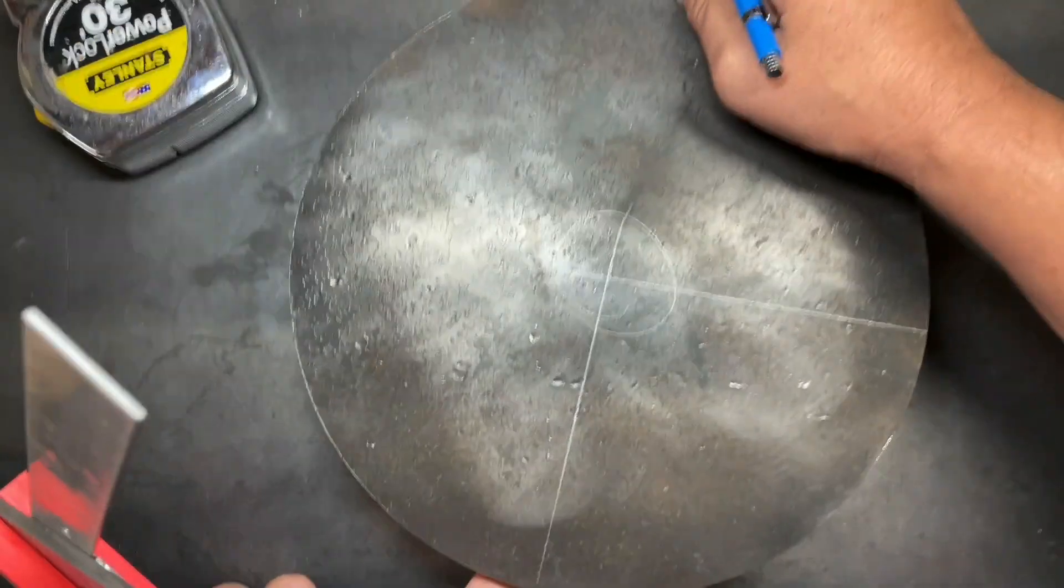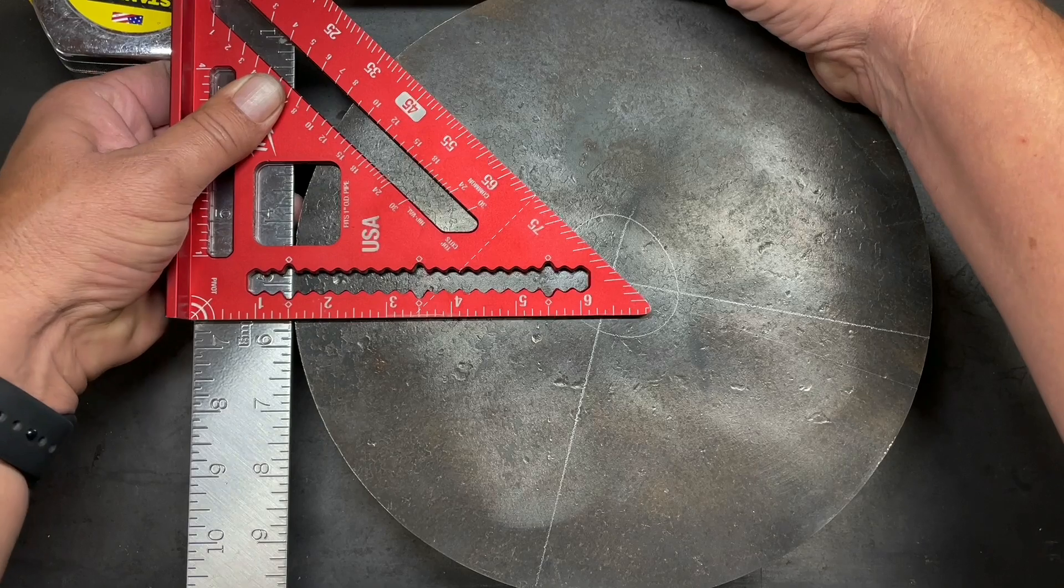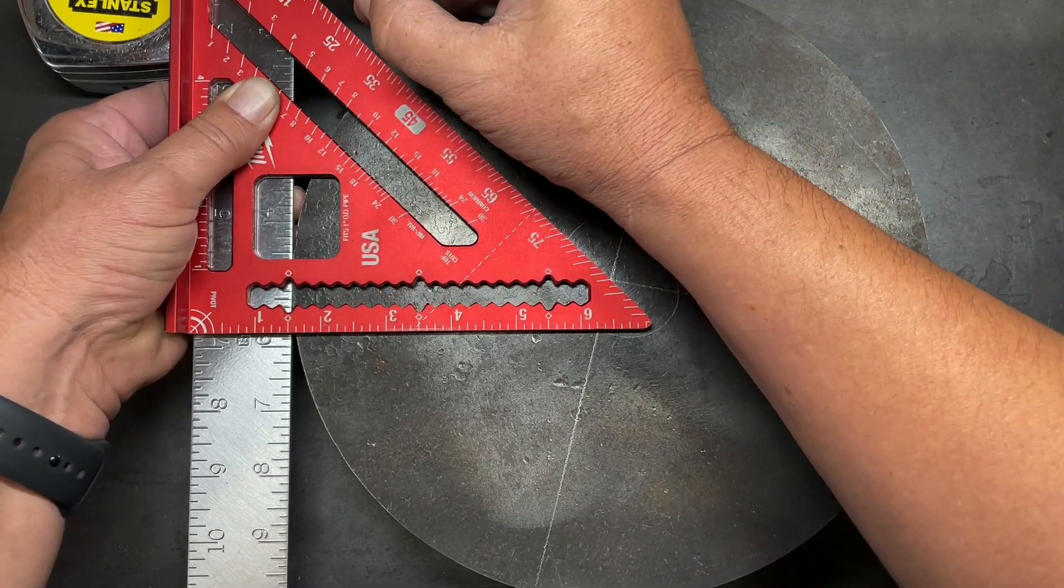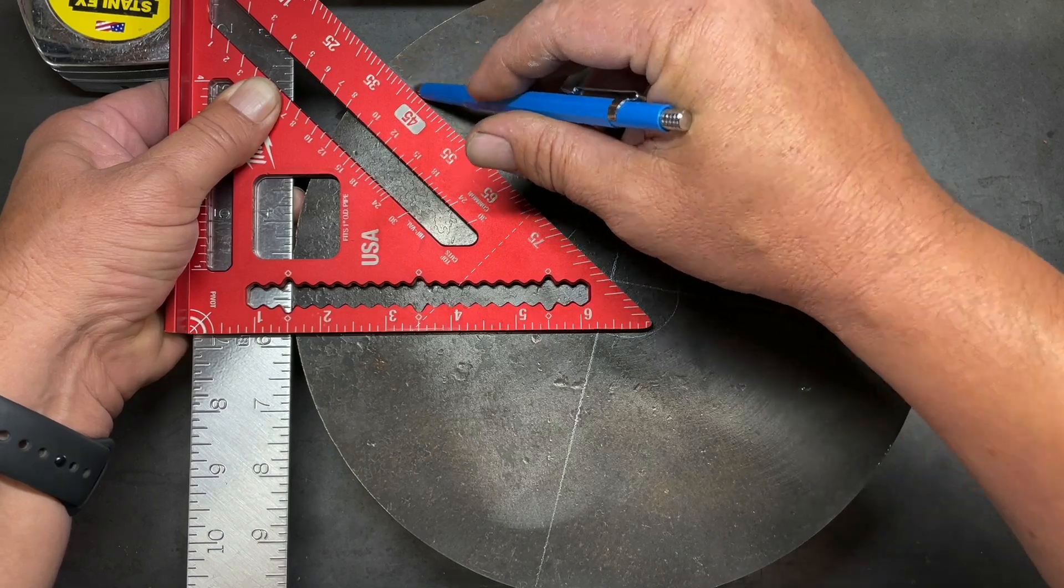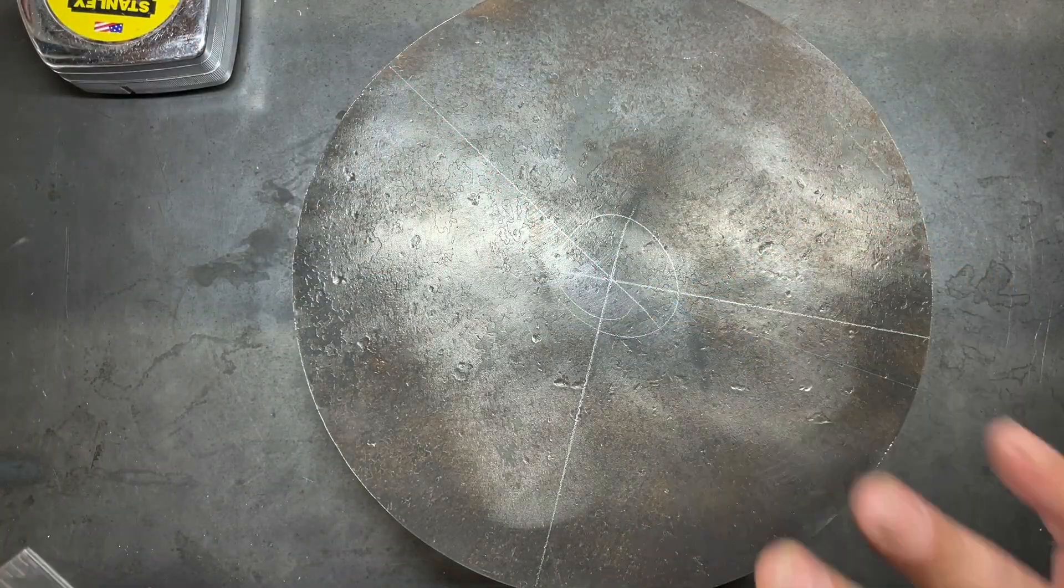And to check it, we'll just go and rotate it one more time in a different orientation. We'll go somewhere in here. Reset our square. A little tough to see because I'm off angle here, but that should be right on the money.